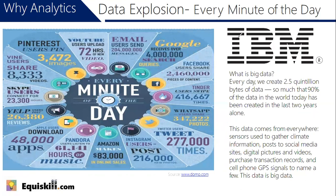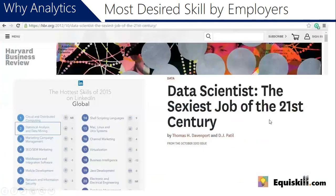To illustrate the scale: there are 277,000 tweets a minute, 4 million Google searches per minute, and Amazon is making more than $83,000 a minute. The amount of data being generated globally is phenomenal, and people don't know what to do with it — hence the enormous interest in data science and machine learning. As a result, data science has become the hottest skill globally.